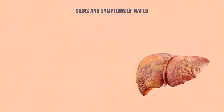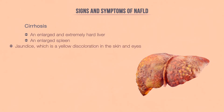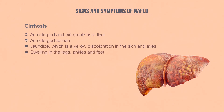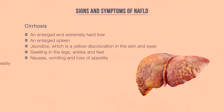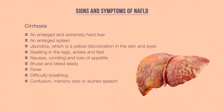In the final and most severe stage of cirrhosis, many more symptoms begin to appear. You may have an enlarged and extremely hard liver and enlarged spleen, jaundice — which is yellow discoloration in the skin and eyes — swelling in your legs, ankles, and feet, nausea, vomiting, loss of appetite, easy bruising and bleeding, fever, difficulty breathing, confusion, memory loss, or slurred speech, and itchy skin.